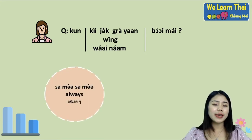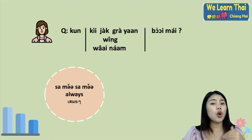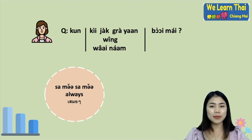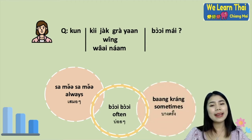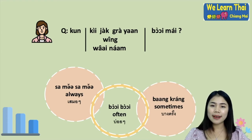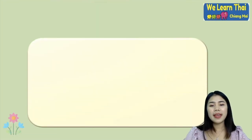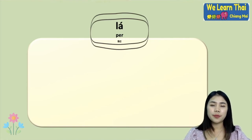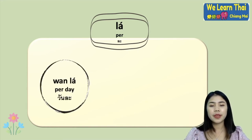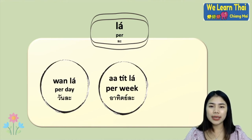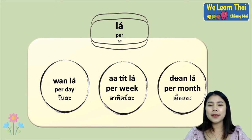For answers to 'how often', you can say 'sà-mǒe sà-mǒe' meaning always — like always cycling, always swimming, always reading a book. Or 'bòi bòi' meaning often. Or 'bâang kráng' meaning sometimes. We also have the word 'lá', which means 'per'. You can say 'wan lá' for per day, 'aa-tít lá' for per week, or 'duen lá' for per month.